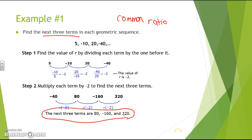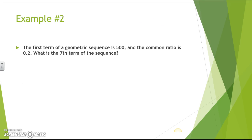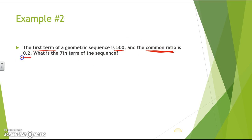It's very important to follow these steps when solving. The next example is a bit more involved and requires using the geometric sequence formula. The first term of the geometric sequence is 500, the common ratio is 0.2, and we want to find the seventh term.